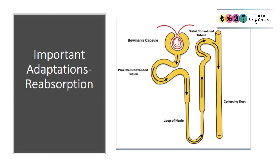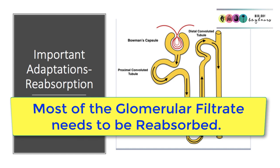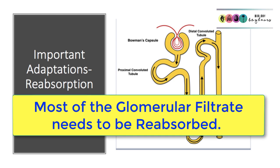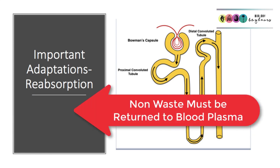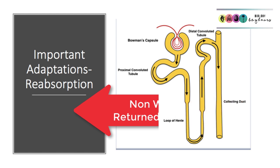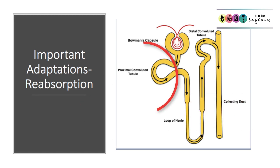Ultrafiltration removes a lot of non-waste material from the blood plasma, and this needs to be reabsorbed — taken back out of the nephron into the bloodstream as quickly as possible. Most of this reabsorption takes place at the proximal convoluted tubule.